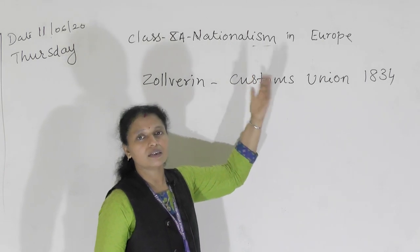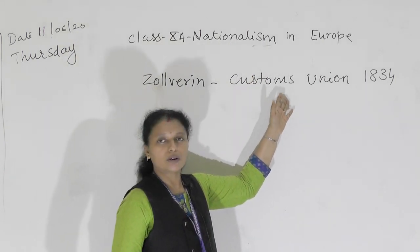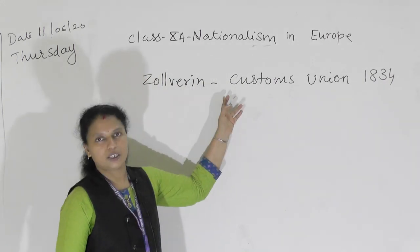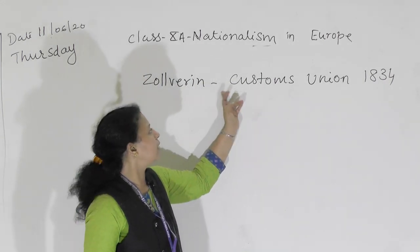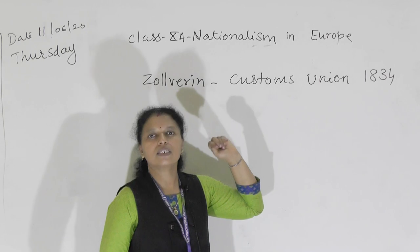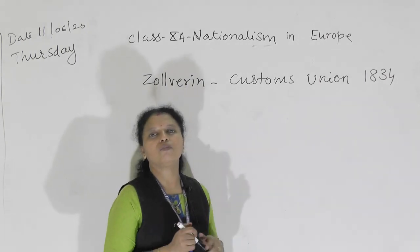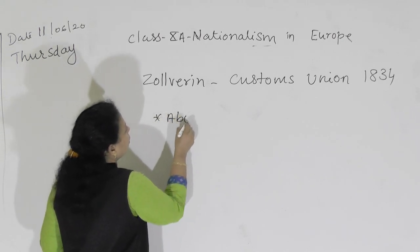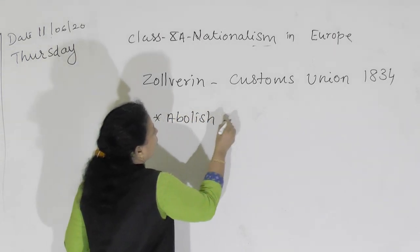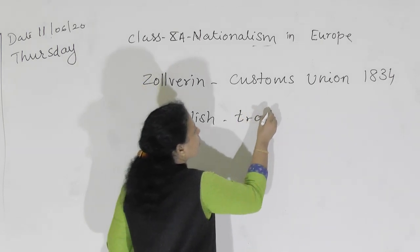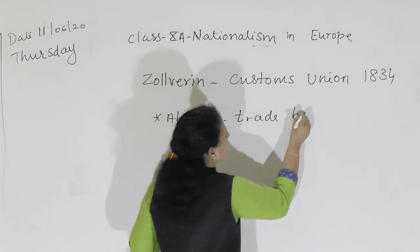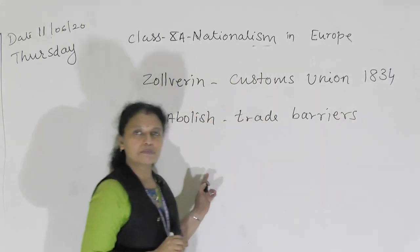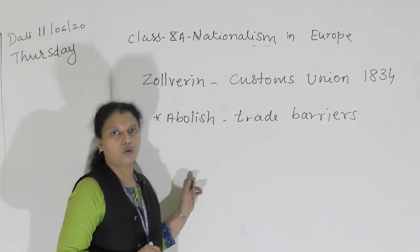In 1834, very late after the old nation-state formation, they had made a Zollverein. Zollverein means a customs union, specially formed to remove or abolish the trade barriers. It was made by the middle class and was known as Zollverein in 1834.